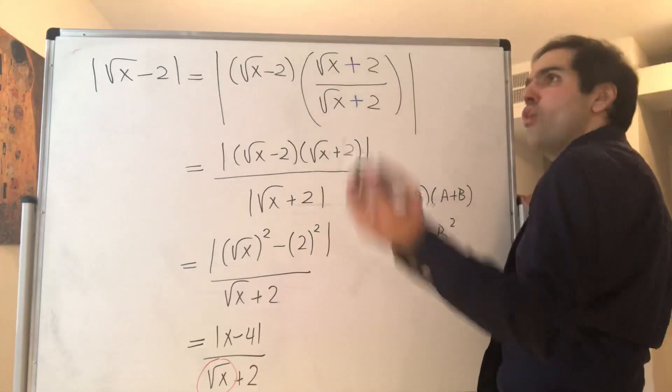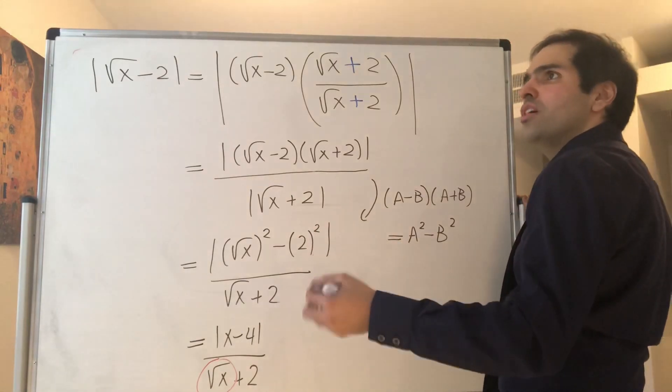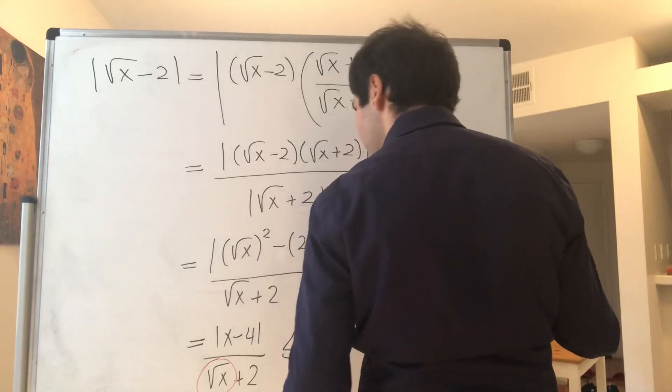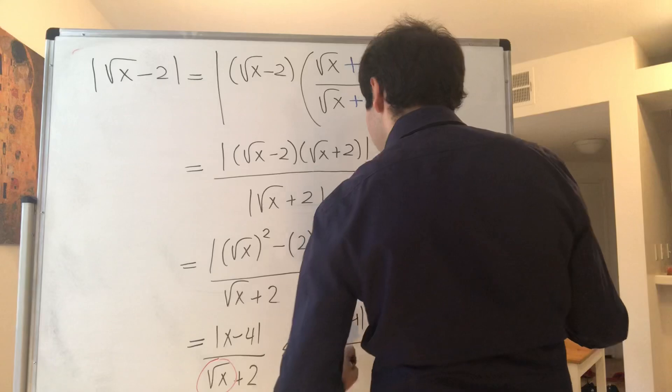Like, 1 third, which is 1 over 3 plus 2, 1 plus 2, is less than 1 half, for instance. So, this becomes at least less than or equal to x minus 4 divided by 2.